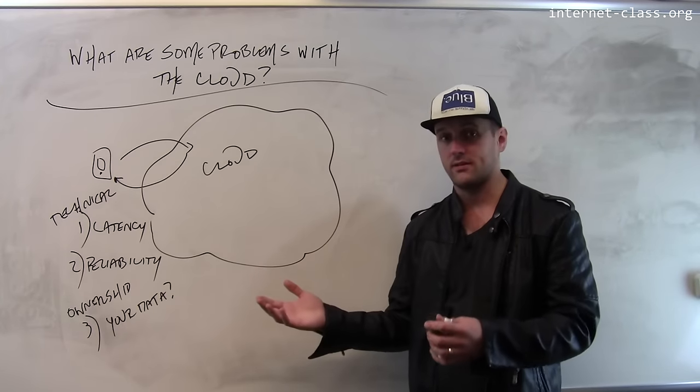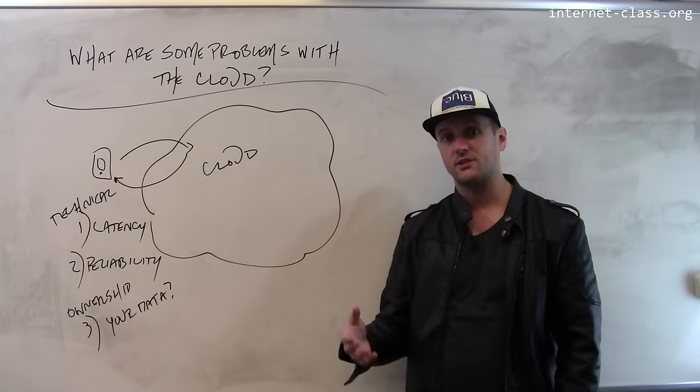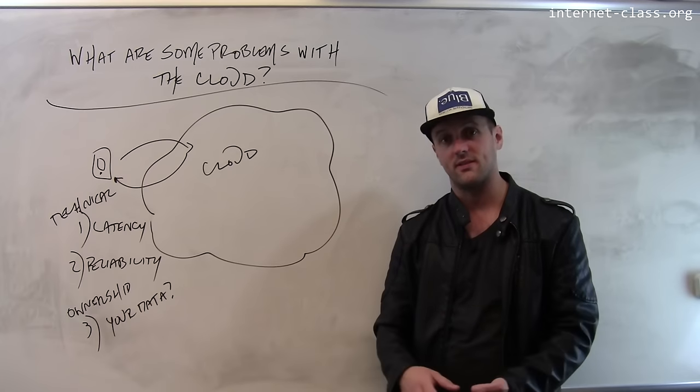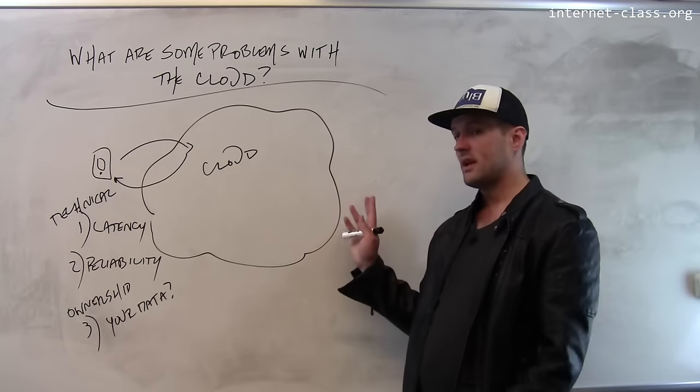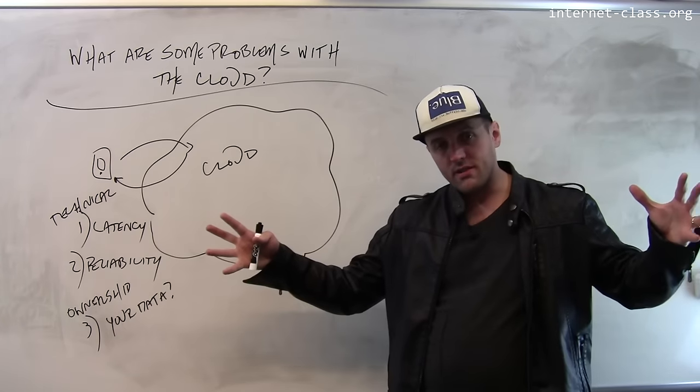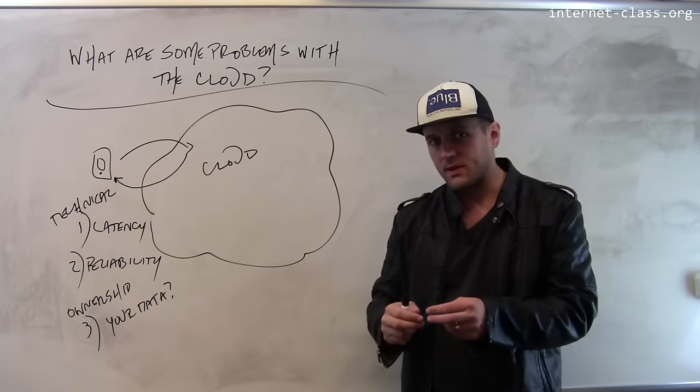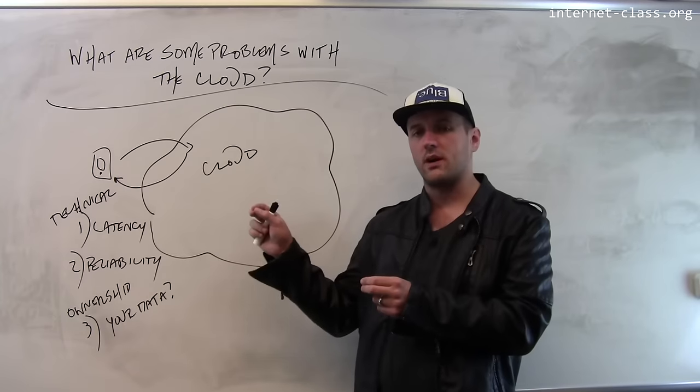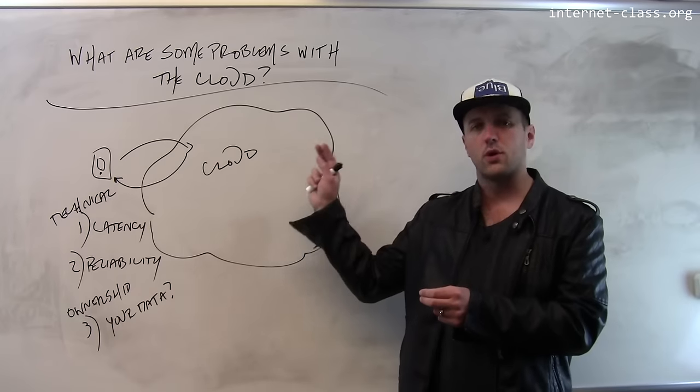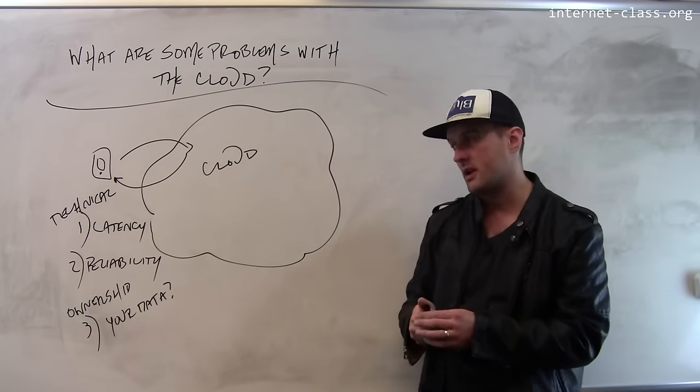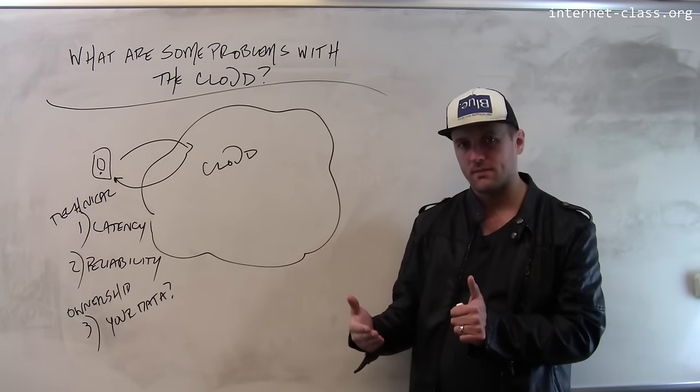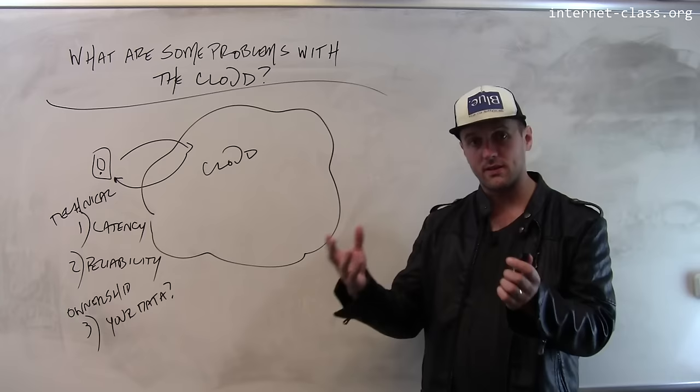The cloud also opens up lots of opportunities for surveillance, whether that's from a government or some sort of corporation that wants to track us, understand us to sell us things. The cloud means that we're aggregating all this data together, and so it creates much fewer points where some entity can watch, can monitor, fewer companies that have to cooperate with the government in order to provide a lot of information about us.